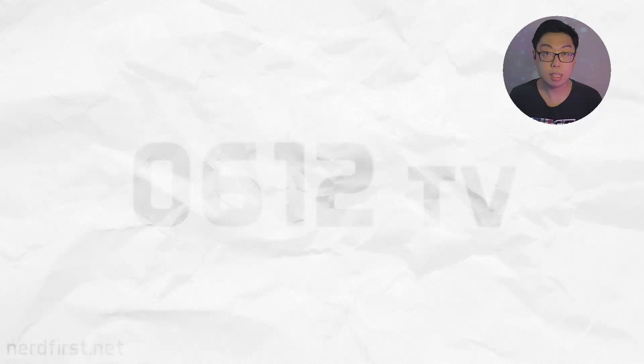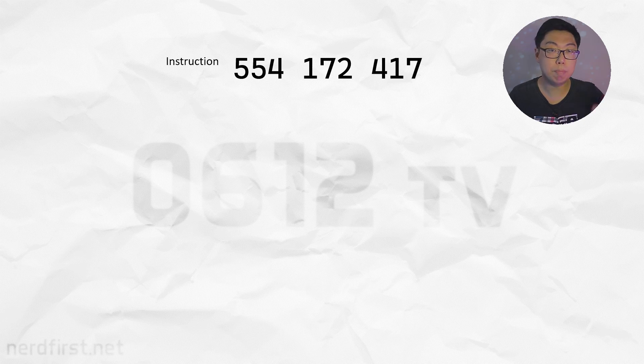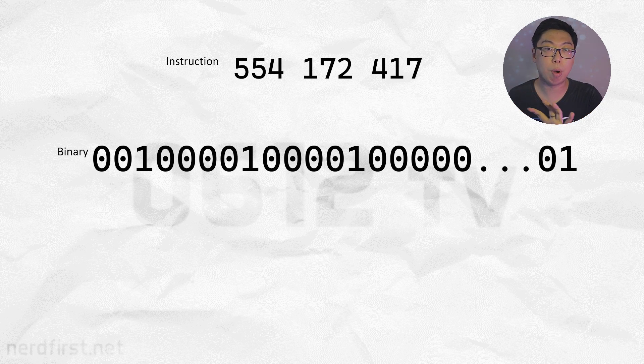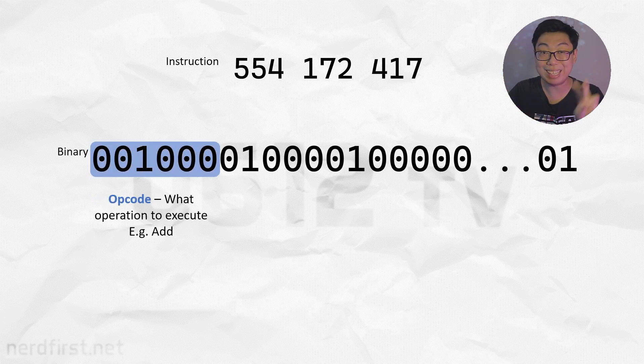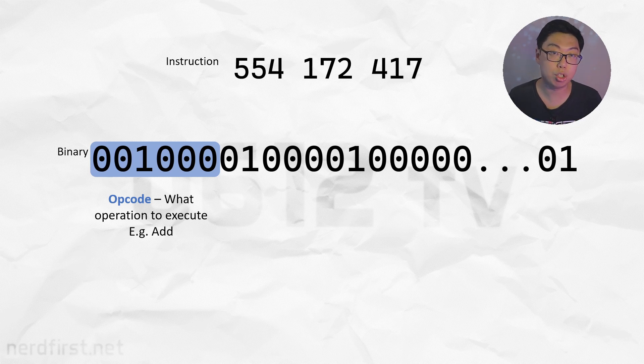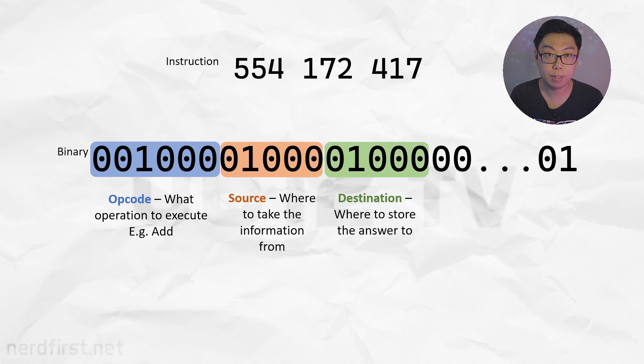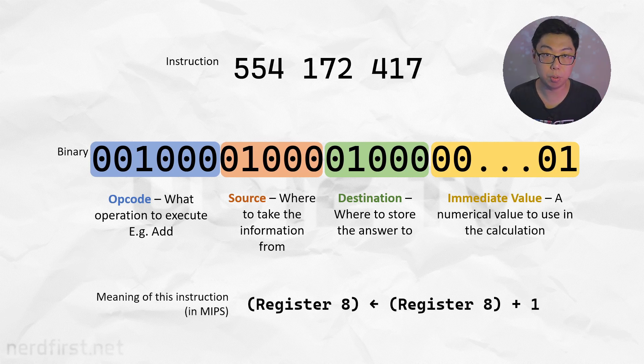Then, the decode step is where your CPU tries to understand the instruction. Typically, instructions are just big numbers. If you break it down into its binary representation, different sets of bits represent different things. For example, the number represented by the first couple of bits could be the opcode, that is, the number representing the operation to be done. It could be arithmetic, like addition, logic like comparing two numbers, or even read and write to RAM. The rest of the numbers are the operands to that operation. The decode step is pretty much mandatory to understand exactly what your CPU is supposed to do.